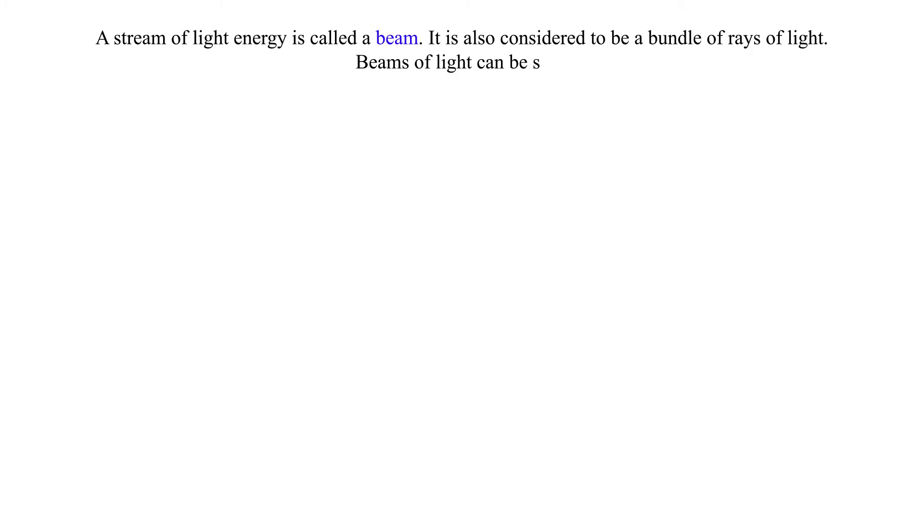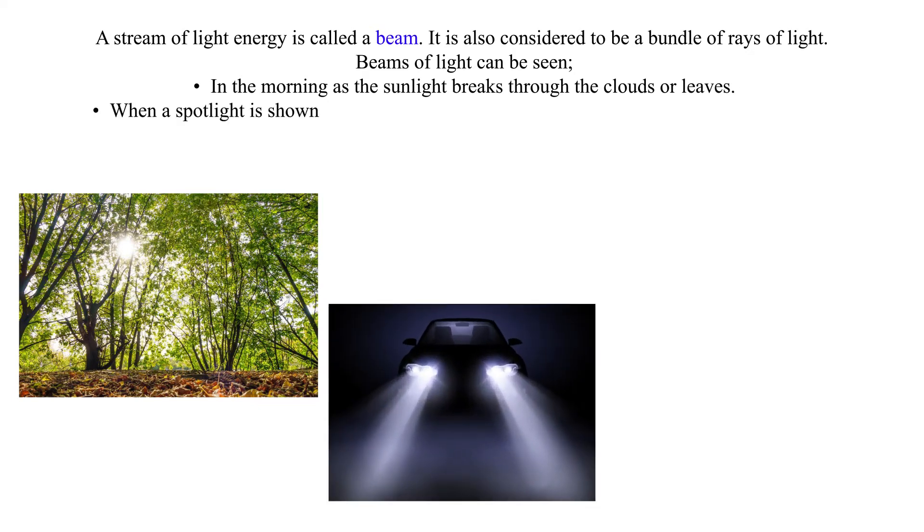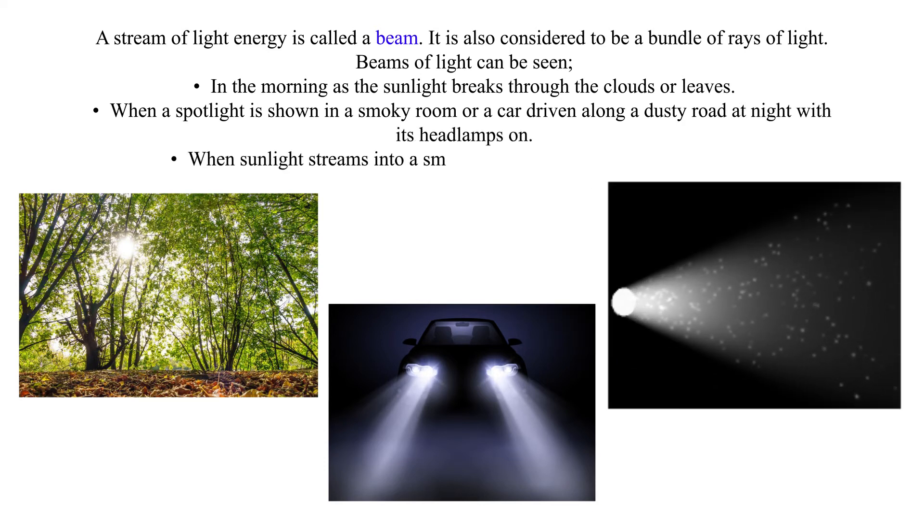Beams of light can be seen in the morning as the sunlight breaks through the clouds or leaves, when a spotlight is shown in a smoky room or a car is driven along a dusty road at night with its headlamps on, and when sunlight streams into a smoky dark room through a small opening.